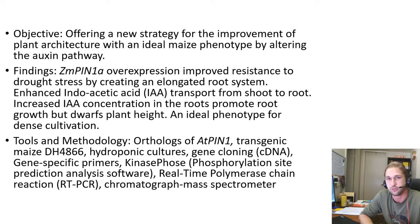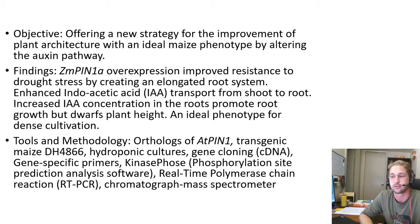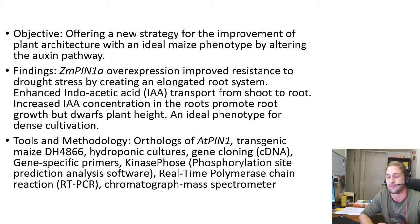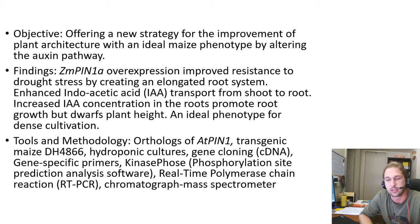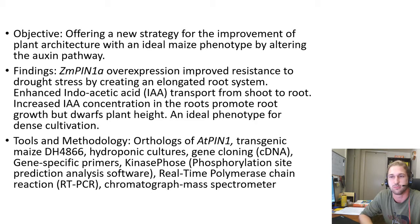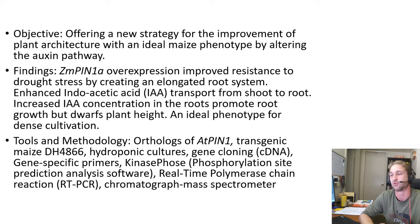They used gene cloning with complementary DNA sequences and had to construct their own gene-specific primers to target these specific corn PIN genes. They used a program called KinaseFOS, which finds phosphorylation sites by prediction analysis. They used real-time polymerase chain reaction (RT-PCR) to take RNA and convert it into complementary DNA, ensuring they infected their corn species with the transgenic gene ZmPIN1. They also used a chromatograph mass spectrometer to measure the amount of auxin in different regions of the plant.